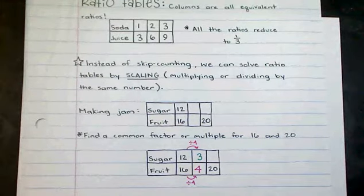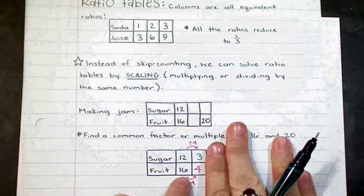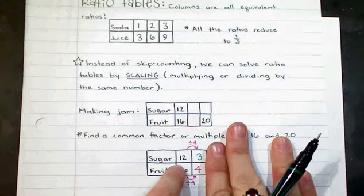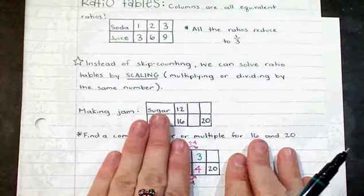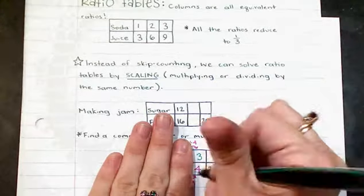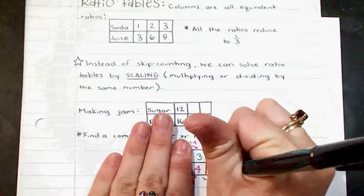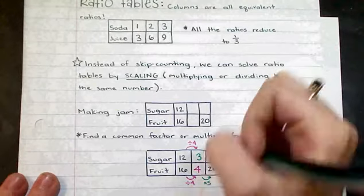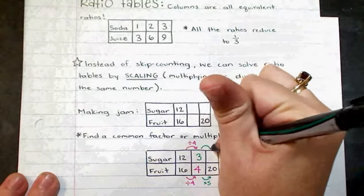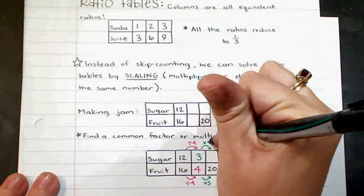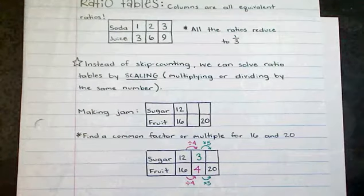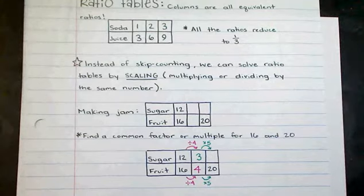Now I just have one more step. I need to now scale 3 fourths, which is an equivalent fraction to 12 sixteenths. You can see I kind of just reduced 12 sixteenths to 3 fourths. Now I need to change 3 fourths so that the denominator is 20. So 4 times 5. Since I did that to the denominators, I need to do that to the numerators. So 3 times 5 is going to give me a result of 15.